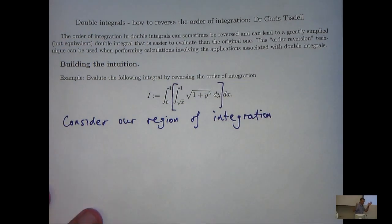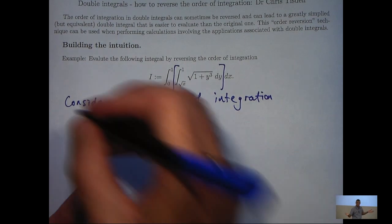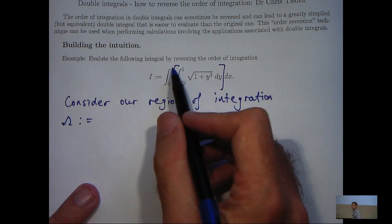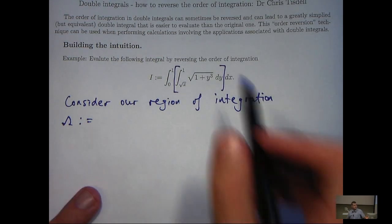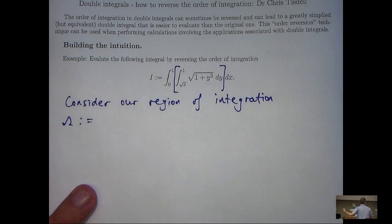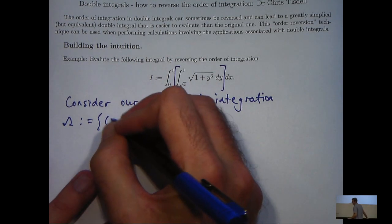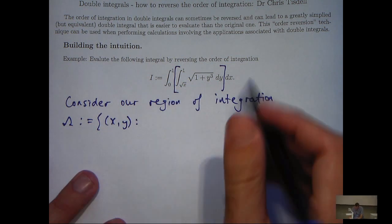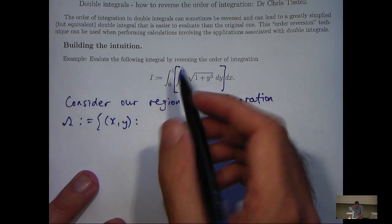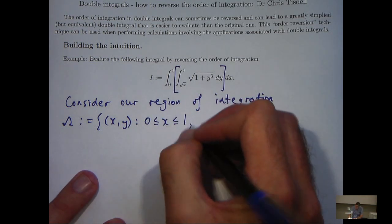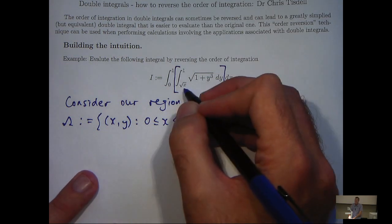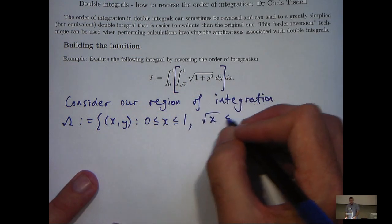I'm going to call the region of integration omega. We can form omega from the upper and lower limits of integration in our integral sign, acknowledging the order of the differentials. The outside differential is dx, so x is between 0 and 1. And y is the inside differential, so y is between root x and positive 1.